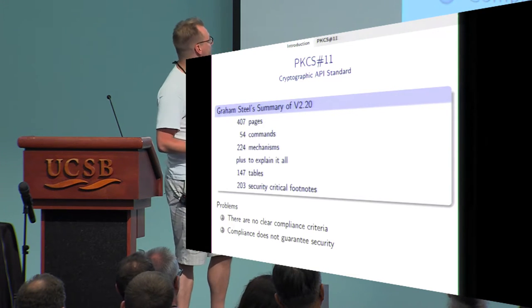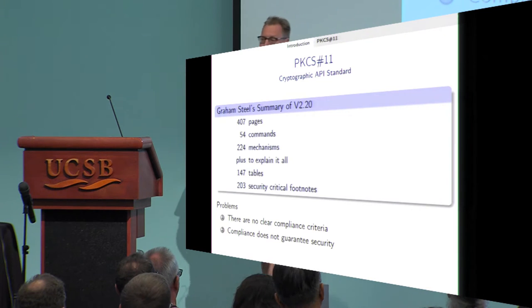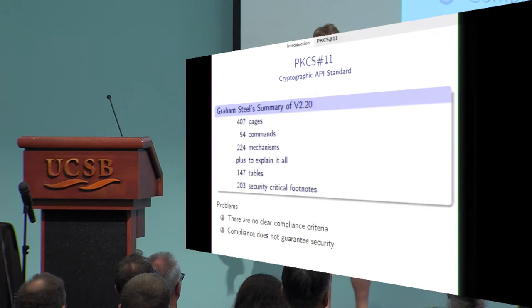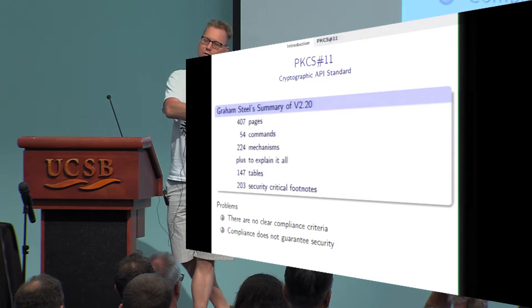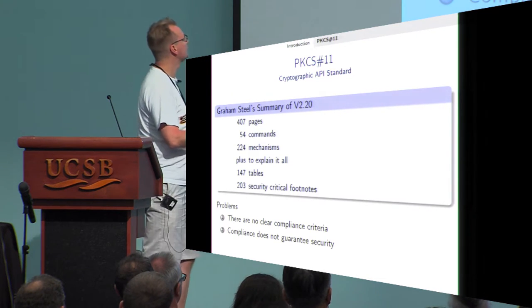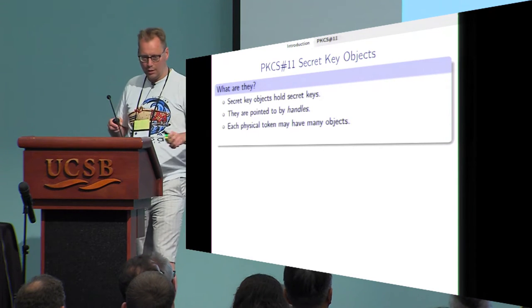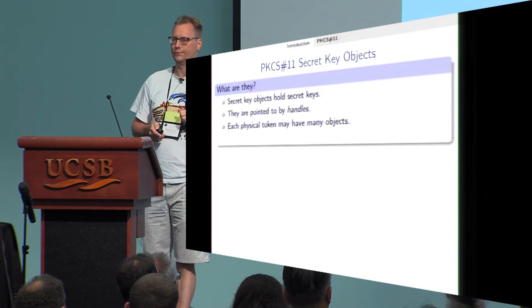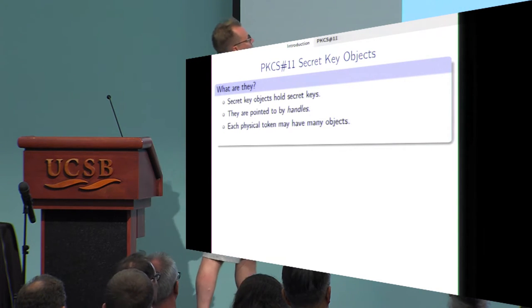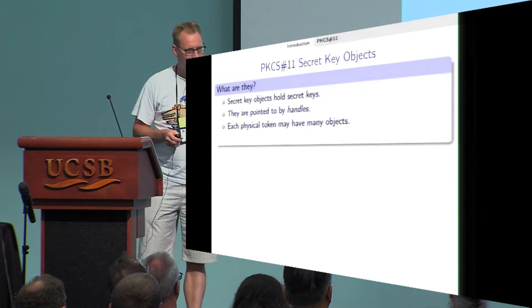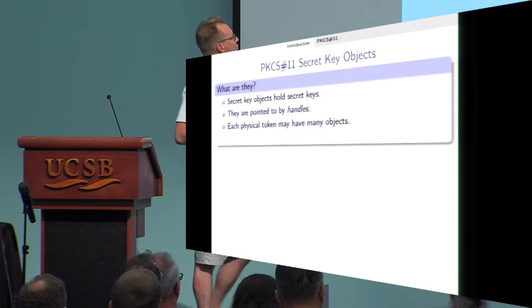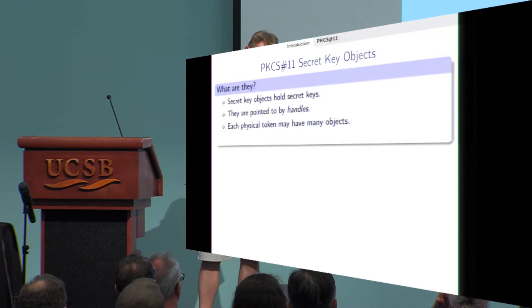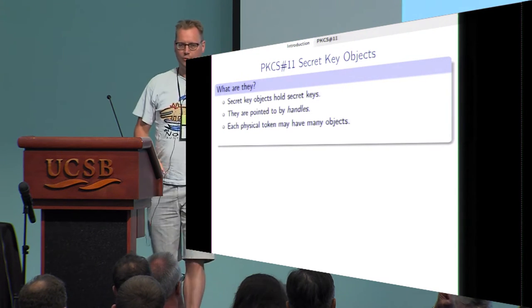There are no clear compliance criteria, and even if things are compliant, you don't have a security guarantee, because there are many possible configurations and some are secure while others are not. To limit the scope, we look at a few core components. The first is the secret key object, which holds the secret key. These are pointed to by handles — the handle points to the object — and each physical token may have many objects.